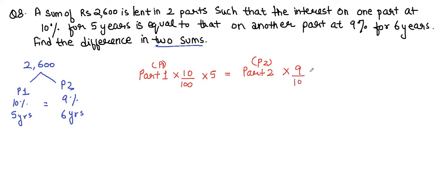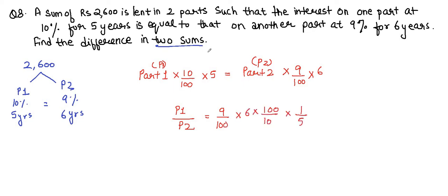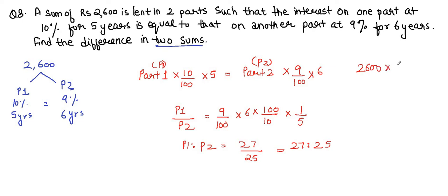Solving: P1/P2 = (9 × 6) / (10 × 5) = 54/50 = 27/25. So the ratio P1:P2 = 27:25.